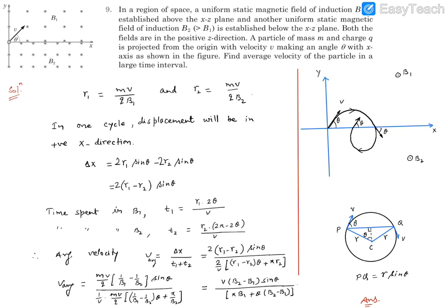Question 9: In a region of space, a uniform static magnetic field of induction B1 is established above the xz plane, and another uniform static magnetic field of induction B2, which is greater than B1, is established below the xz plane. The picture is on the left side. Both fields are in the positive z direction. A particle of mass m and charge q is projected from the origin with velocity v making angle theta with the positive x direction as shown in the figure.